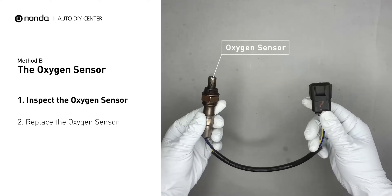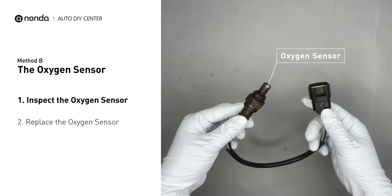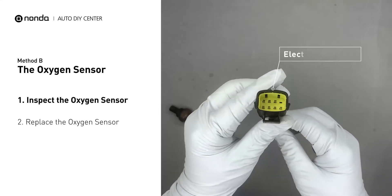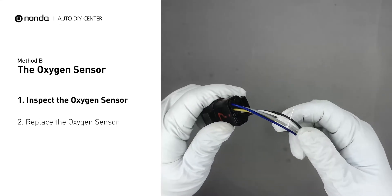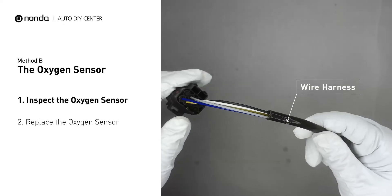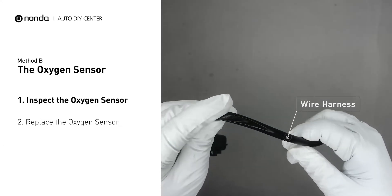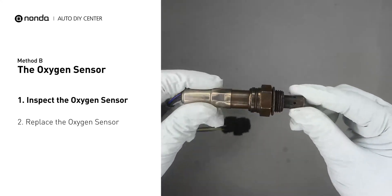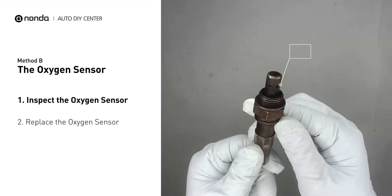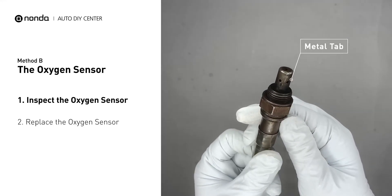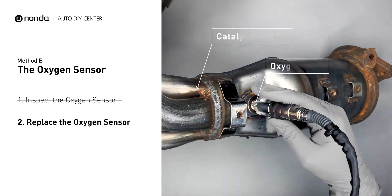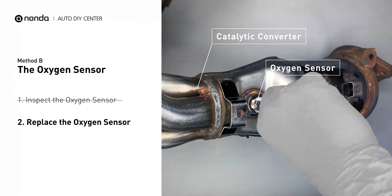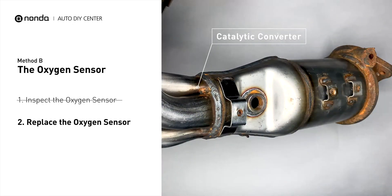Visually check the oxygen sensor's electrical connections, wire harness, and metal tabs for any damages. If damages are found, then replace the oxygen sensor.